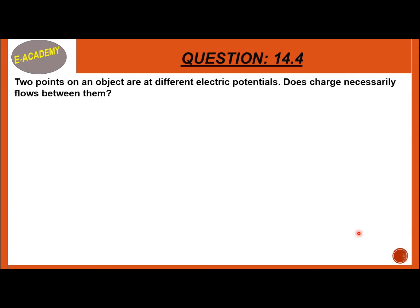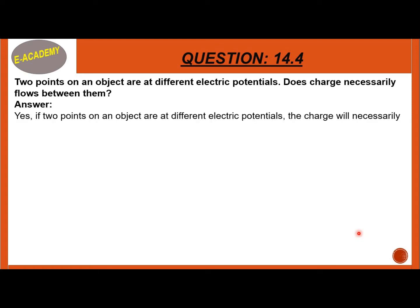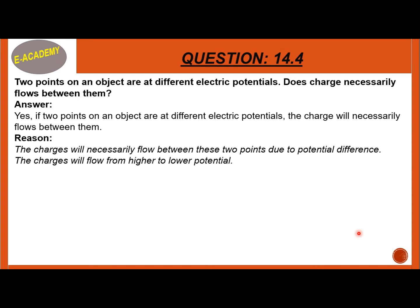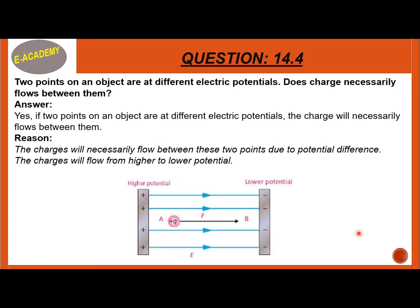Question 14.4: If two points on an object are at different electric potentials, does charge necessarily flow between them? Yes, if two points on an object are at different electric potential, charge will necessarily flow between them due to the potential difference. The charge will flow from higher to lower potential.